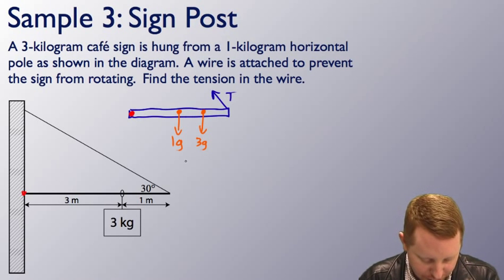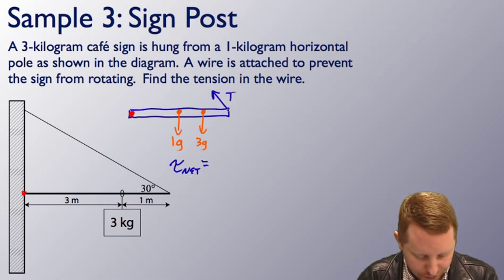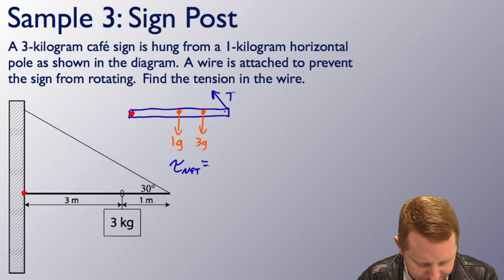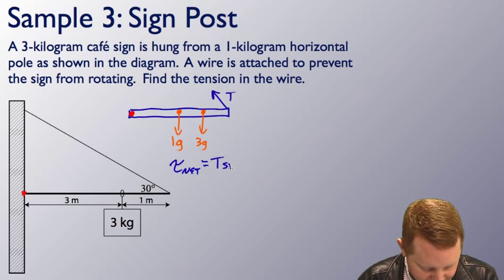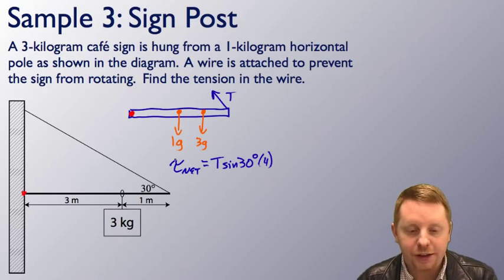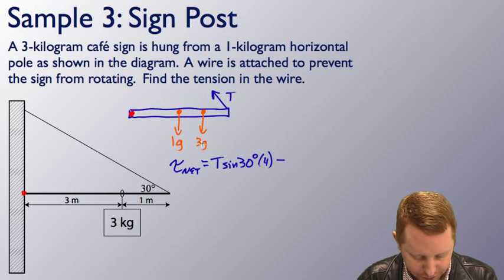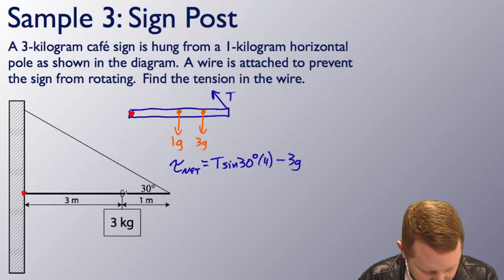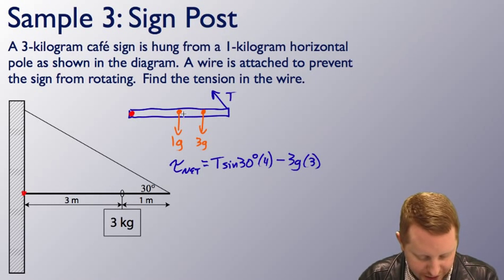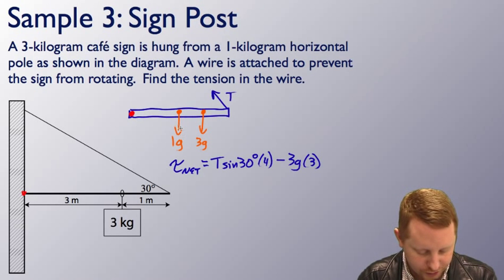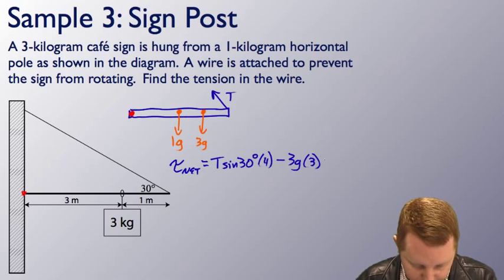Now, I know that my net torque here must be 0. It's not rotating. Therefore, let's write up the sum of all the torques. We have T sine 30 degrees times the distance, the lever arm, 4 meters. So that will be T sine 30 degrees counterclockwise, so that's positive times 4. We have these two that are causing clockwise rotations, clockwise torque. So those will be negative. The force is 3g operating at a distance of 3 meters, a lever arm of 3. And we have the pole itself, the weight of the pole, which is 1g operating at a lever arm of 2 meters. So that'll be minus 1g times 2. And that must all equal 0.